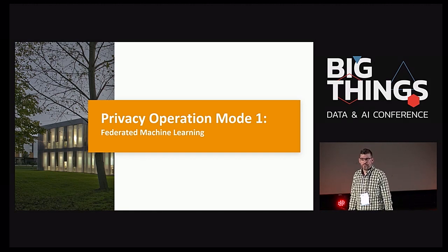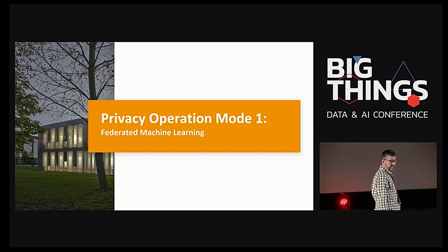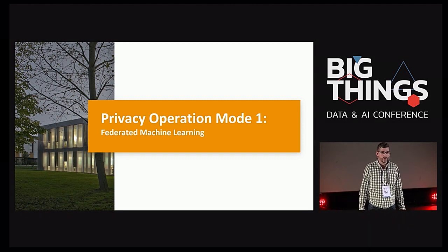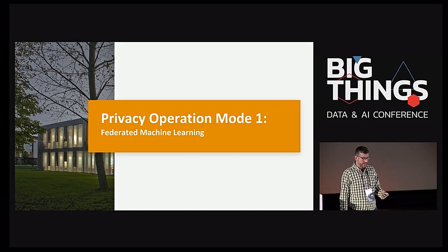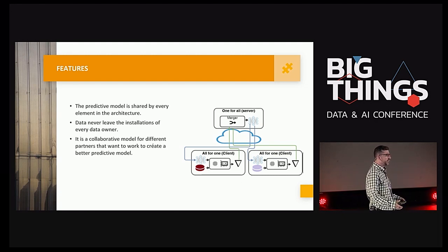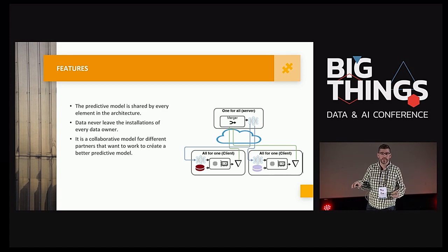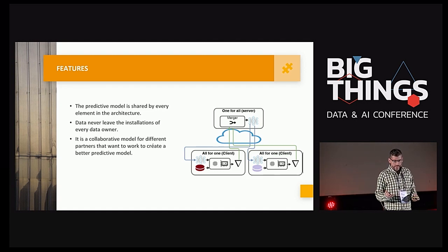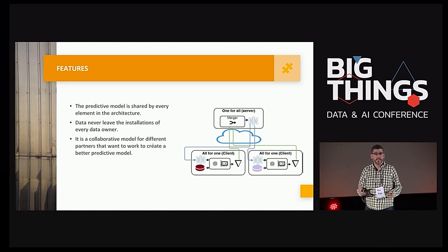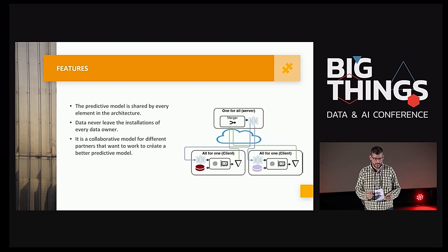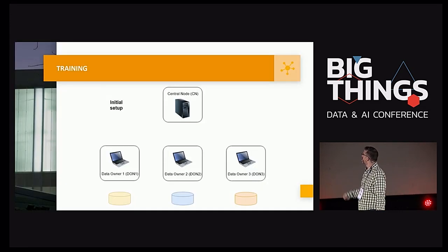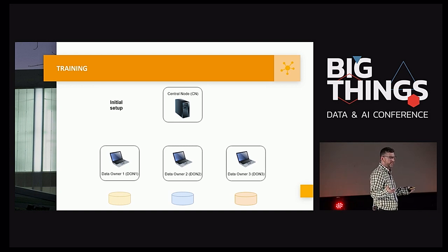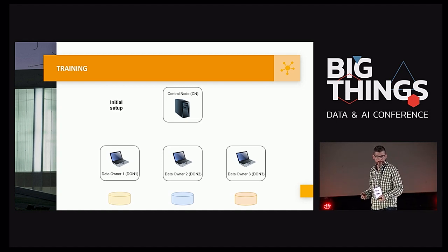The first privacy operation mode of Musketeer is federated machine learning, a concept introduced by Google two or three years ago. It's a training schema where data never leaves the installations of every data owner, so we don't have any information leakage. It's a collaborative training where, at the end, every data owner has a copy of the predictive model. Imagine one central node in the cloud and three different data owners — for example, three different hospitals with different medical records — and I want to create a predictive model.